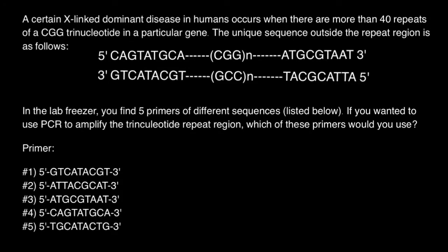Hello and welcome to Nikolai's genetics lessons. Today's problem: a certain X-linked dominant disease in humans occurs when there are more than 40 repeats of the CGG trinucleotide in a particular gene. There is a unique sequence outside the repeat region on each side, and in between we have a region that can be of variable size in different people. If it exceeds 40 repeats, that person would have this genetic disorder.